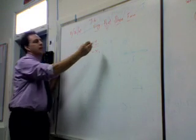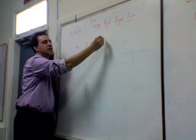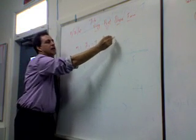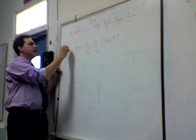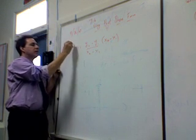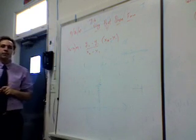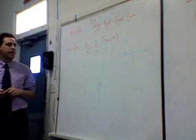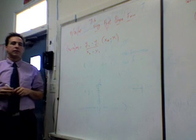We're going to put here x2 minus x1, and then it's m. And on this side, we're going to put x2 minus x1. So m parentheses x2 minus x1 equals y2 minus y1.